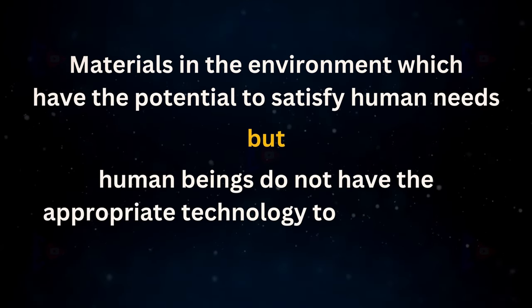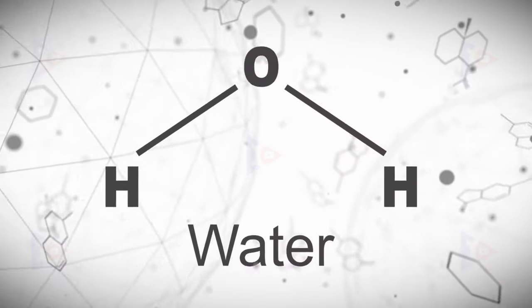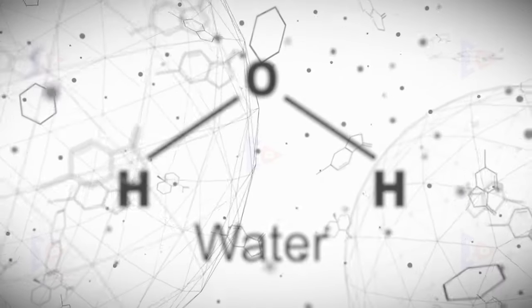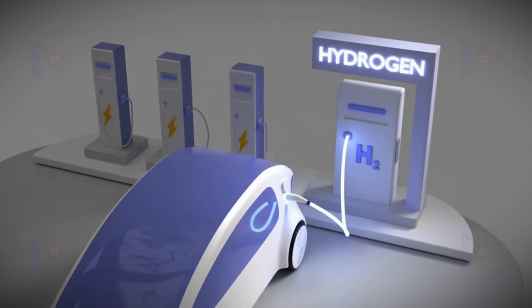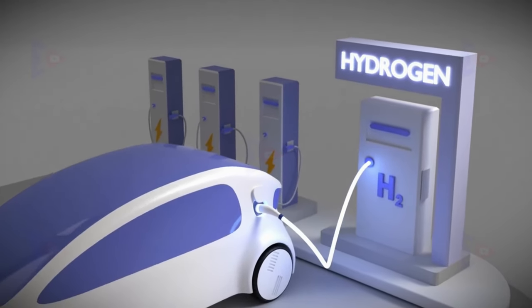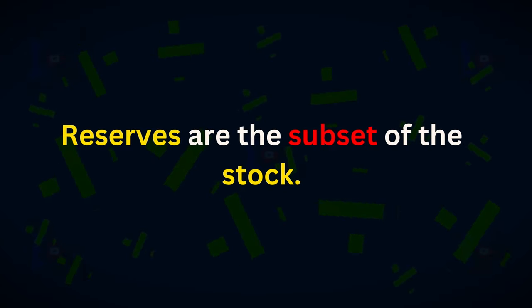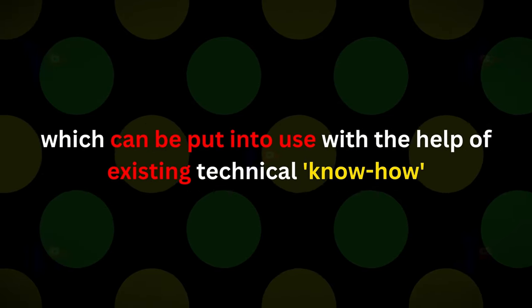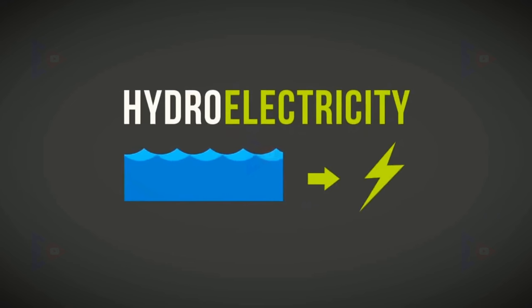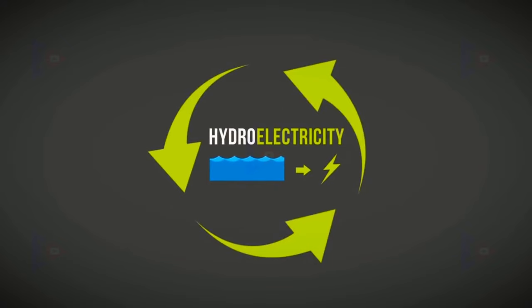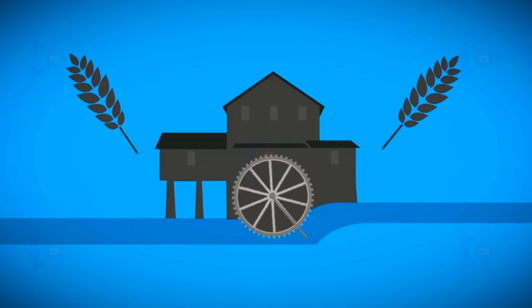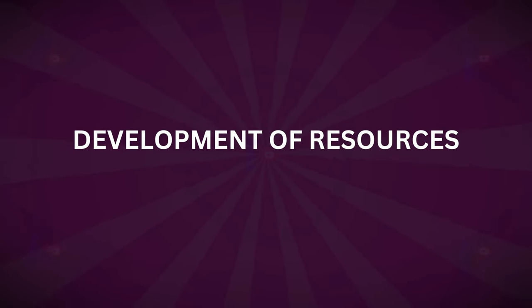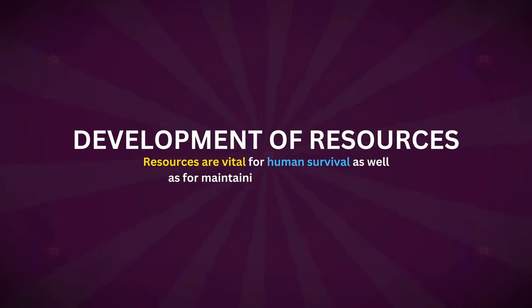Stock refers to material in the environment with potential to satisfy human needs but for which humans do not have the appropriate technology — for example, hydrogen can be used as a rich source of energy but we lack advanced technical know-how to use it. Reserves are a subset of stock that can be put to use with existing technology but have not yet been started. For example, river water can generate hydroelectric power but is currently utilized only to a limited extent — thus water in dams and forests is a reserve for future use.